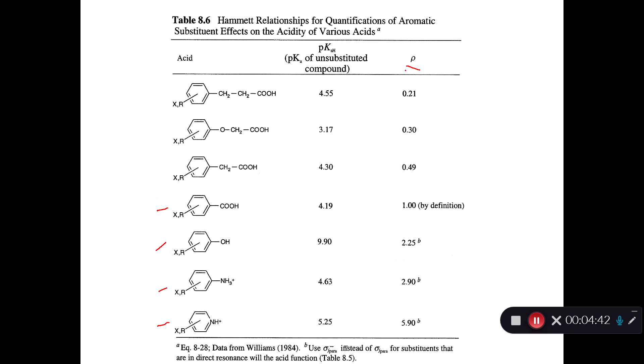So you have your slope term. And then here's also listed the pKa of the unsubstituted compounds. So unsubstituted phenol has a pKa of 9.9. Unsubstituted aniline has a pKa of 4.63. And then you can add substituents to these rings and figure out what's going to happen to the pKa of that compound based on those substituents.